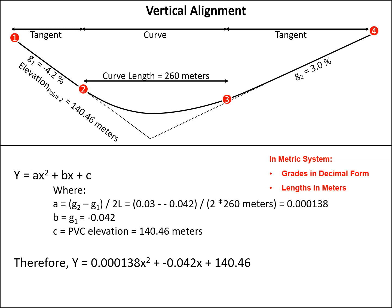This gives us an A of 0.000138. B is just G1, so that will be negative 0.042, and C is the PVC elevation, which is 140.46 meters. Therefore our parabolic equation for this particular curve is Y equals 0.000138 times X squared, plus negative 0.042 times X plus 140.46.